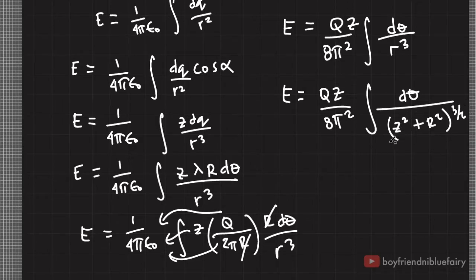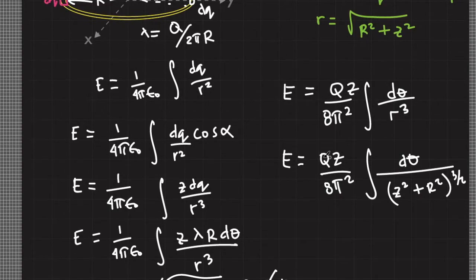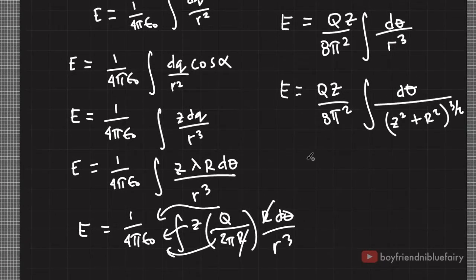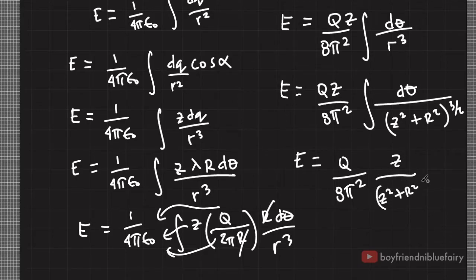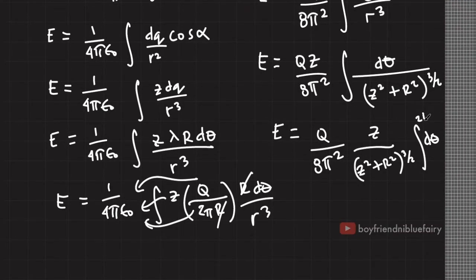Notice that the values of z and capital R from the figure are always fixed — the radius is always fixed and the distance of point P to the origin z is also constant. So we can take the denominator out of the integral sign as well. We are left with integrating dθ from 0 to 2π in order to get the total contribution of all infinitesimal elements of the ring of charge. The integral of dθ gives theta, evaluated from 0 to 2π, yielding 2π.